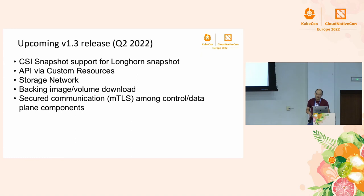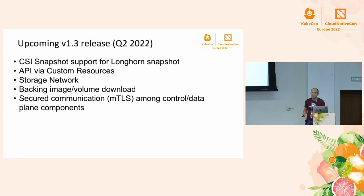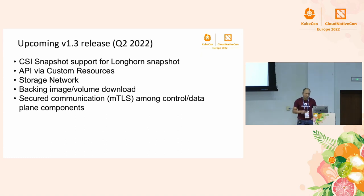In the 1.3 release, we're including CSI snapshot support for Longhorn in-cluster snapshots — previously CSI snapshots only triggered Longhorn backups to the backup store off-cluster, and now in-cluster snapshots are added. We're also enabling modification of custom resources via kubectl, so the Longhorn CLI effectively becomes kubectl. Additionally, we're adding a storage network: when combined with the Multus plugin, storage traffic used by Longhorn can go through a separate dedicated network with more bandwidth. Other features include backing image and volume download, and secured communication between the control plane and data plane.